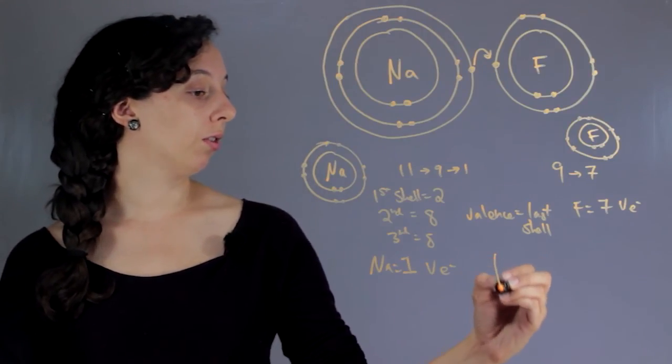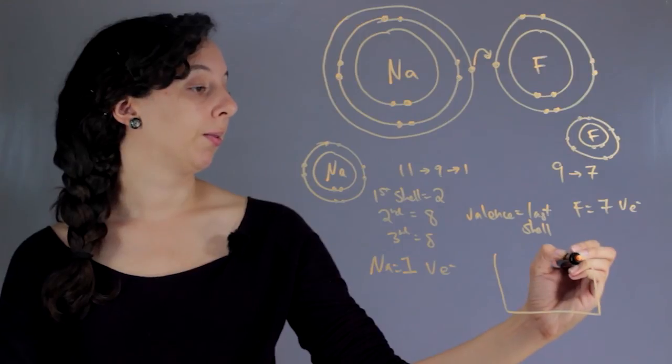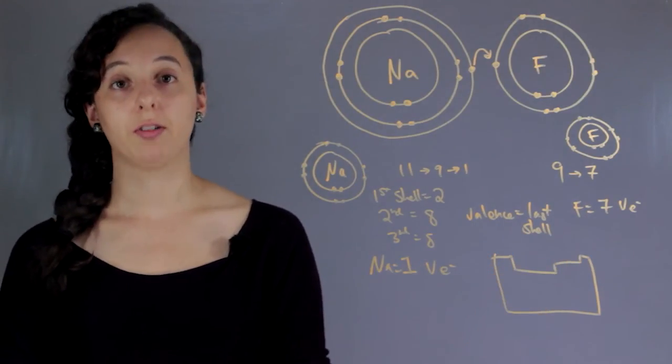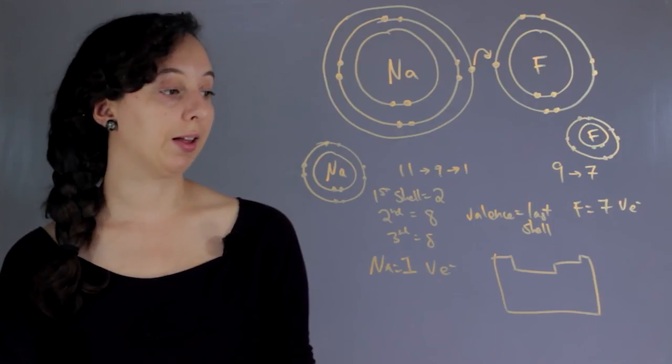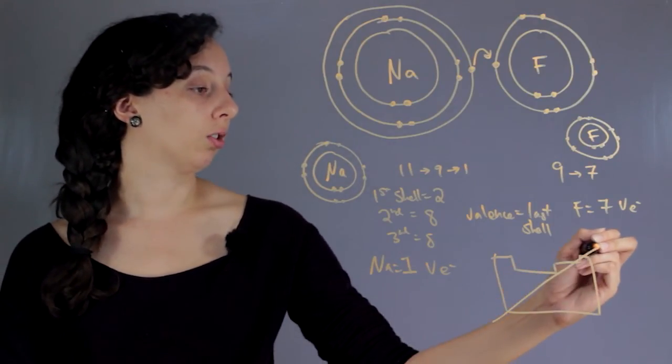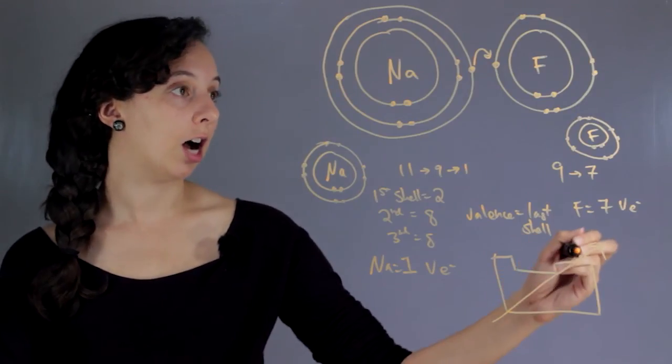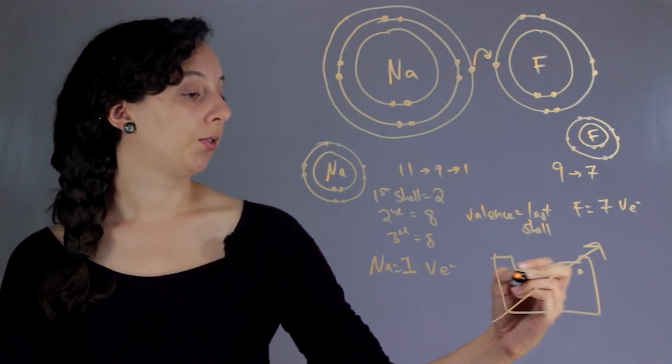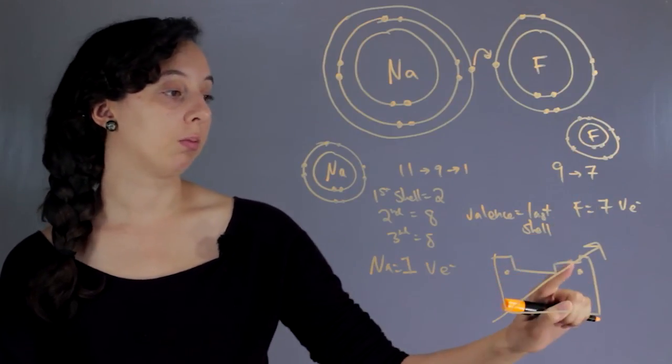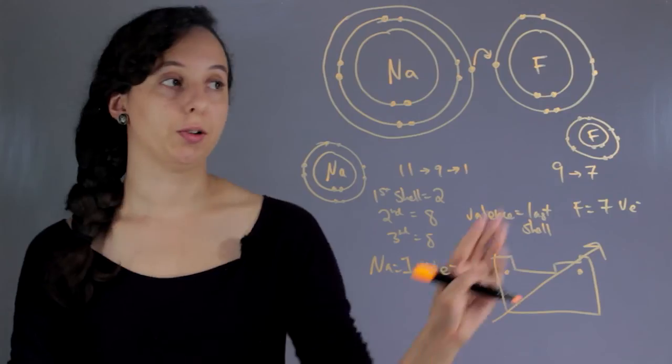And so the overall trend for what atoms are going to give up an electron or not is described by electronegativity. And if this is the periodic table, it's always a trend like this, from the bottom left to the top right. So fluorine's over here, sodium's over here. So you know that because of this arrow trend, fluorine's be more electronegative. And it all has to do with these shells.